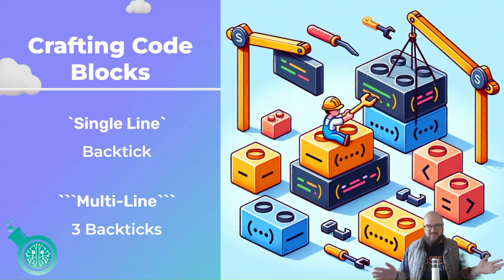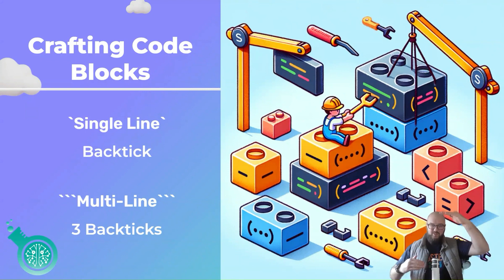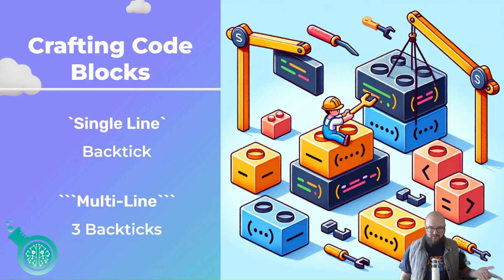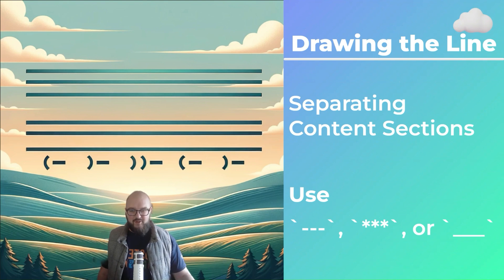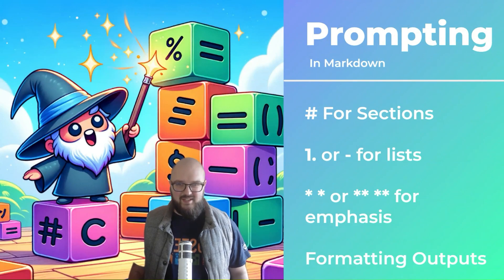Those are the ones you're mostly going to use. Here are a few others just in case: code blocks — you might have seen that in ChatGPT where there's a block of text you can copy. That's just one back-tick for a single line or three back-ticks for multi-line code. And for dividing content sections, just three hyphens, three stars, or three underlines and enter — it'll create a nice little divider.